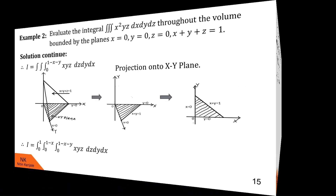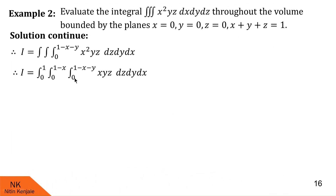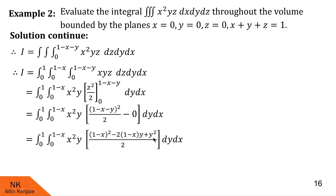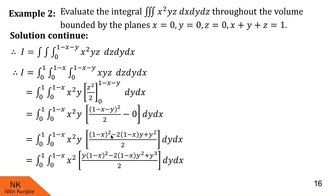Now let us evaluate this integral. For the inside integral with respect to z, keeping x and y constant, the integral of z is z²/2 from 0 to 1−x−y. Substituting the limits gives (1−x−y)²/2. Now let us expand (1−x−y)²: treating (1−x) as a and y as b, we get a²−2ab+b², all divided by 2. Multiplying through by y gives y(1−x)²−2(1−x)y²+y³, all divided by 2.